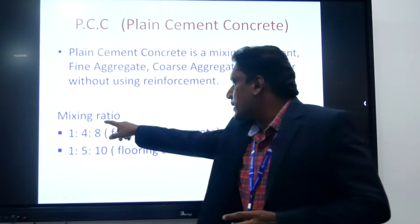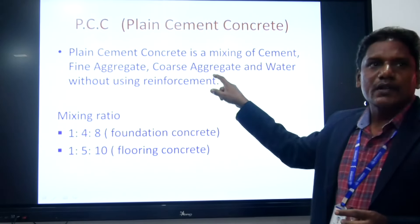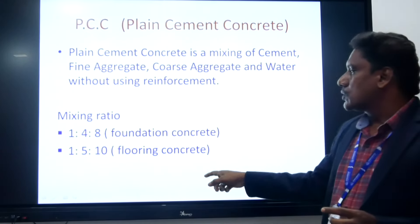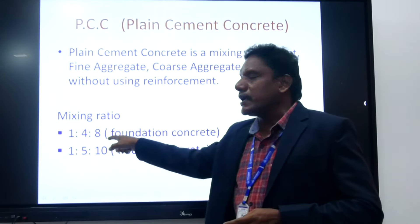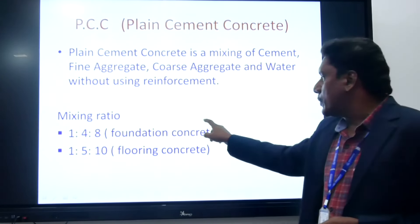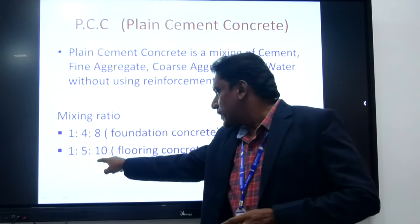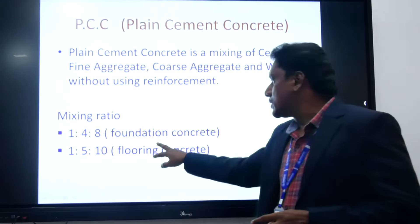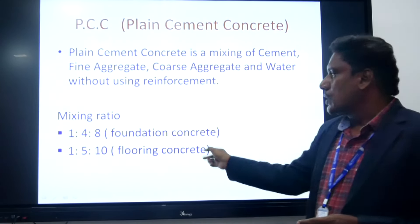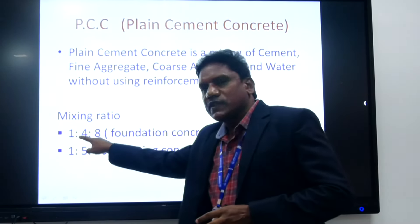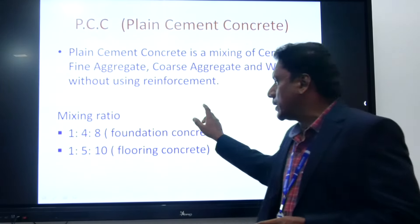What are the mixing ratios used in plain cement concrete? The first one is 1:4:8, which is applicable for foundation concrete. Another one is 1:5:10, which is applicable for flooring concrete. So one part of cement, four parts of fine aggregate, and eight parts of coarse aggregate.